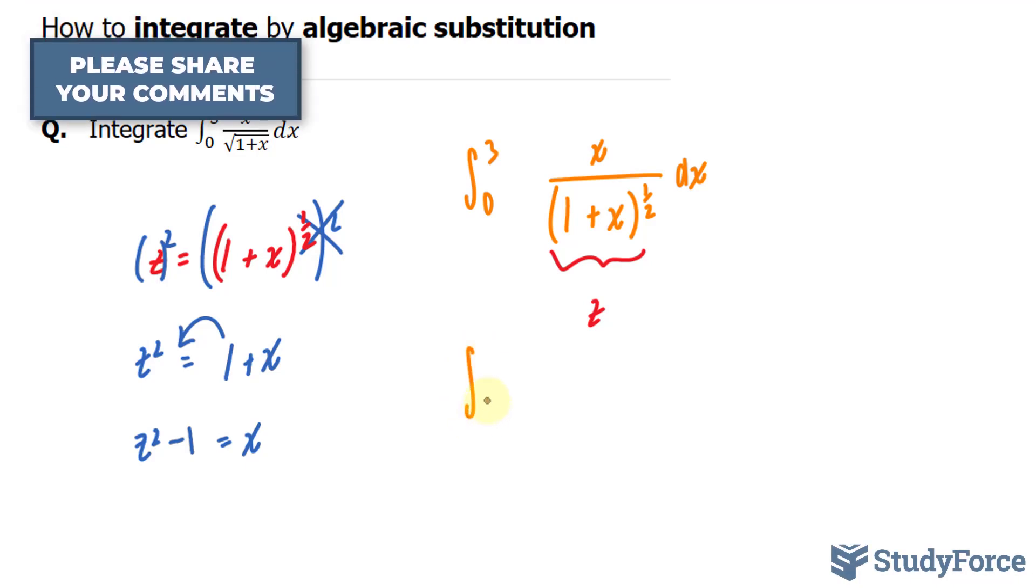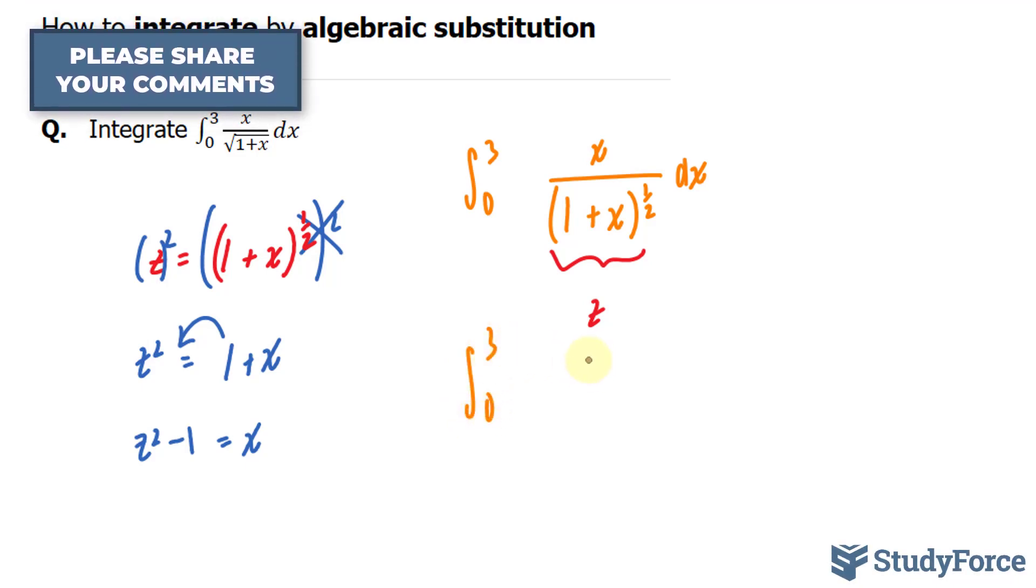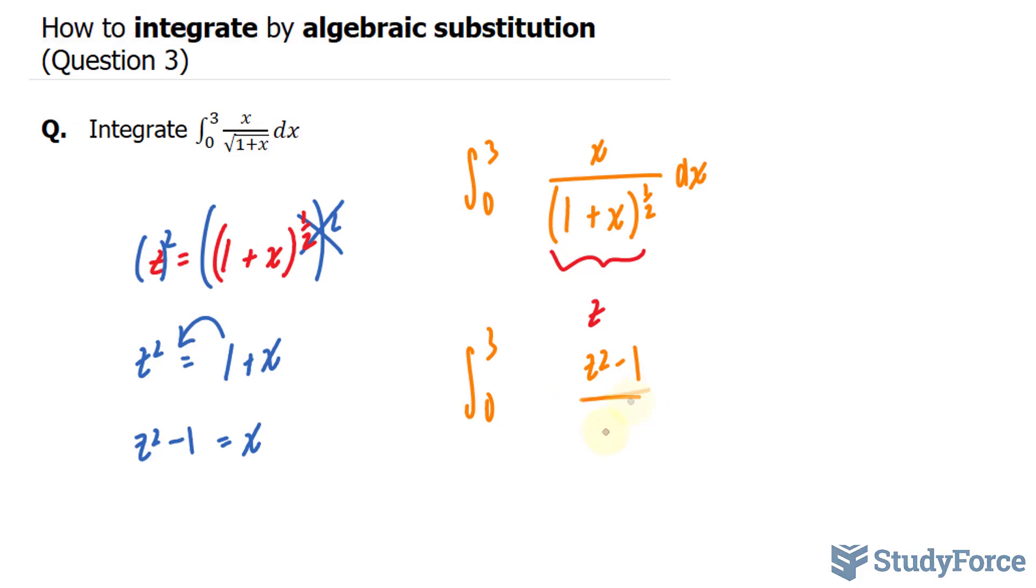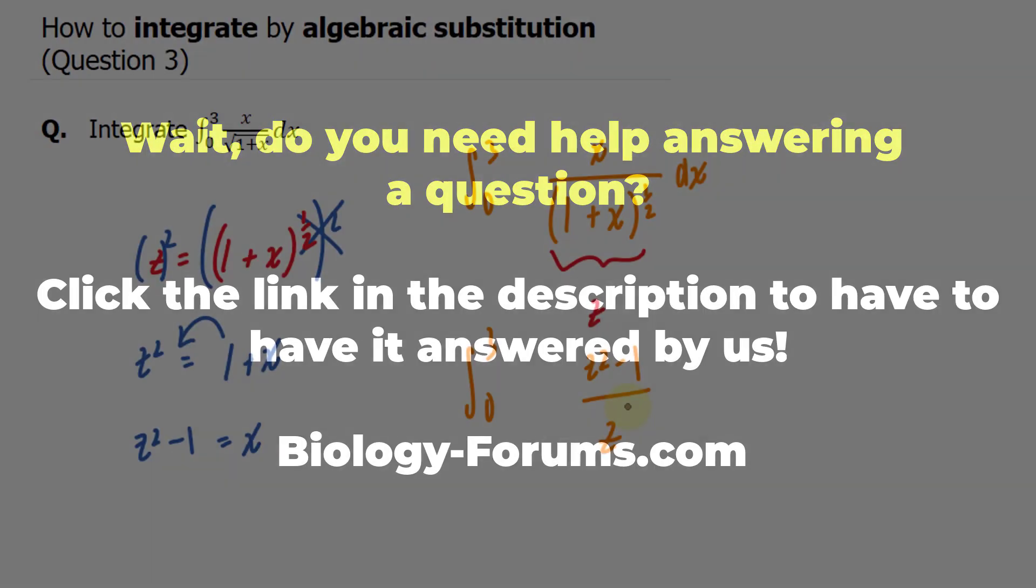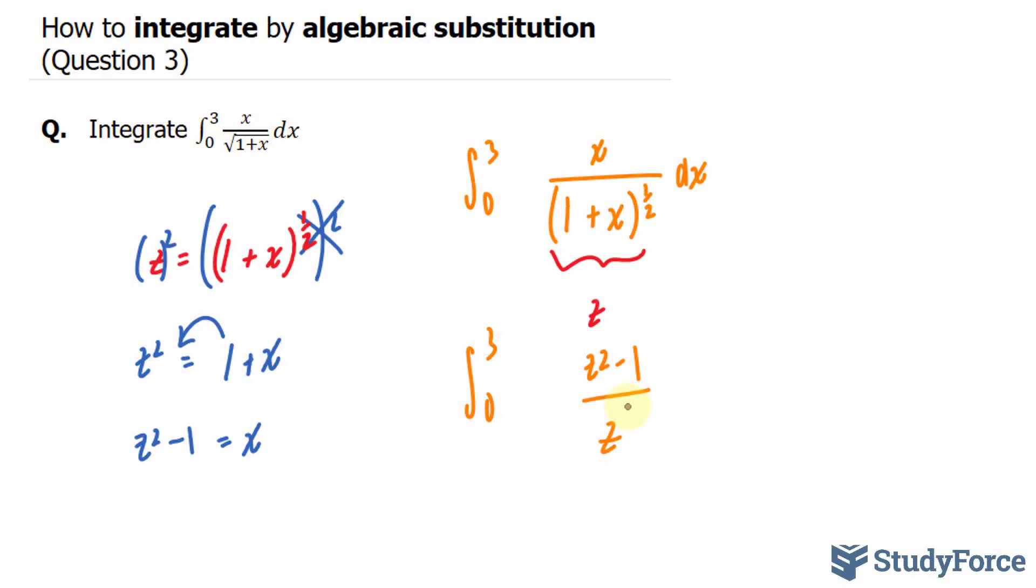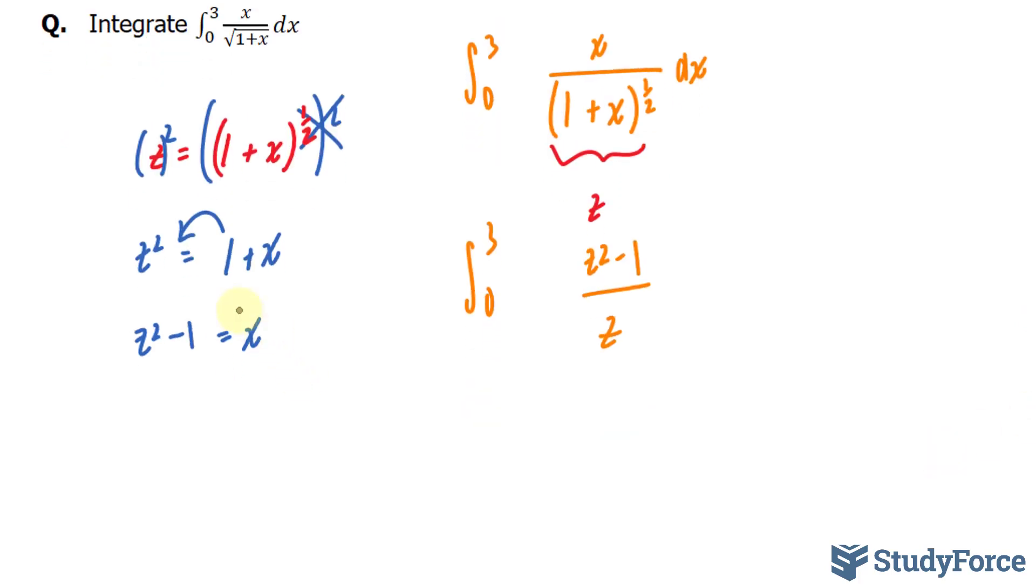So we have the integral between 0 and 3, z to the power of 2 minus 1 over z. Now, originally, our function was in terms of x, so we had dx. But now it's in terms of z. So we have to change this dx into dz. And the only way we can do that is by taking the derivative of this equation with respect to z.